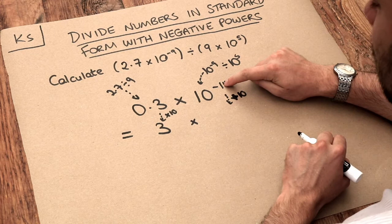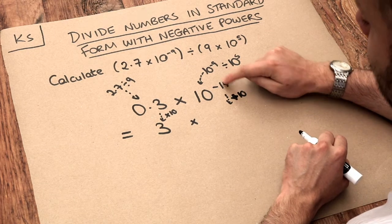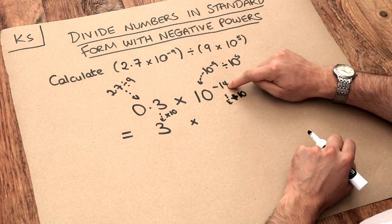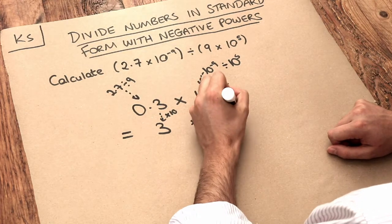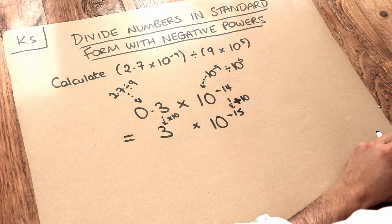So this becomes 10 times smaller. Now if we make this 10 times smaller, the index goes down by 1. Now if you have minus 14 and the index goes down by 1, that becomes minus 15. And that is the final answer.